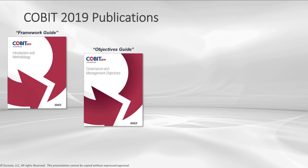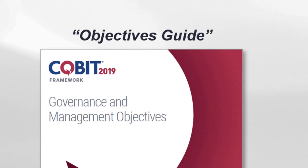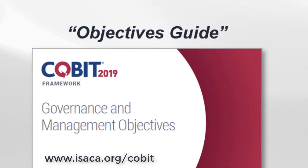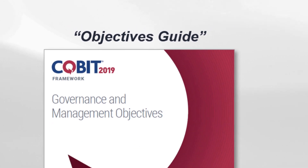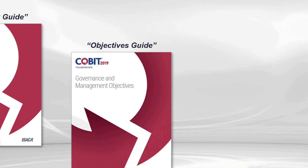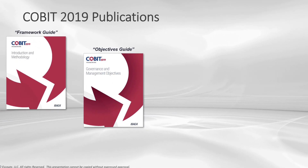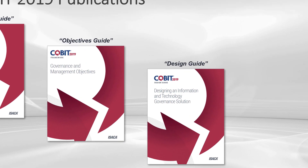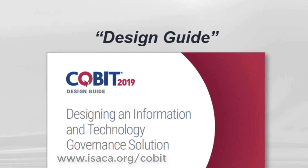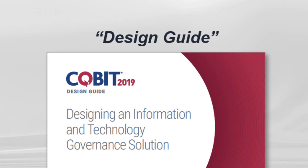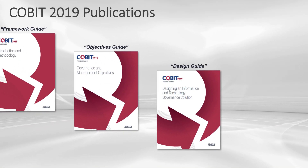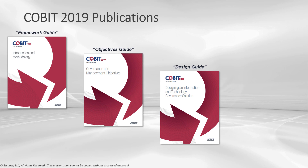The second publication is the Objectives Guide, which has 40 governance and management objectives organized into five domains, with a distinction between the governance domain and the management domain. Each of these objectives is related to one process, and the guidance related to each governance or management objective is described in terms of components. We also have the Design Guide, which is excellent — it introduces focus areas and design factors, and includes a design workflow that helps facilitate the creation of a tailored governance system.